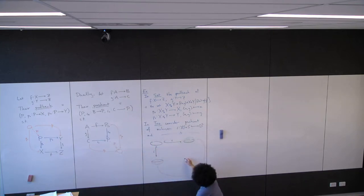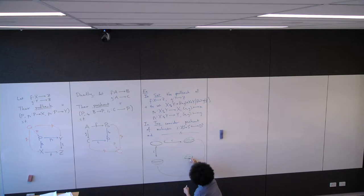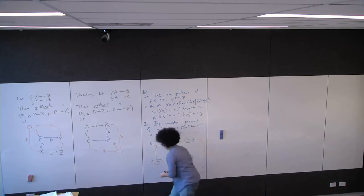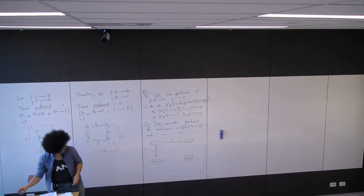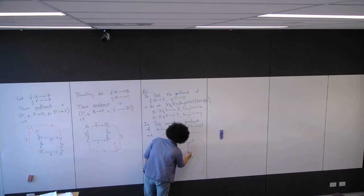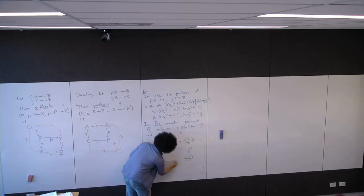We have the two-sphere: the top half is included into the north, the bottom half into the south.